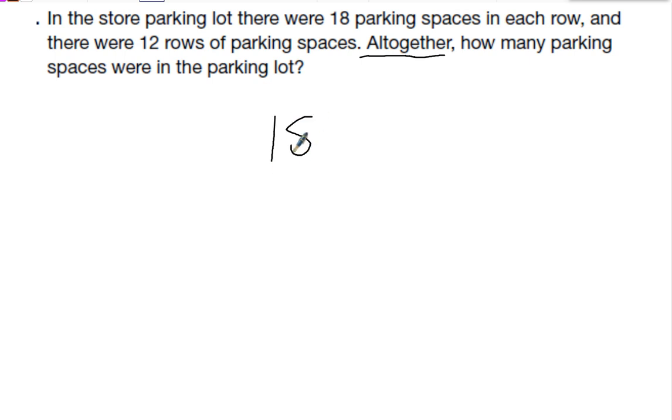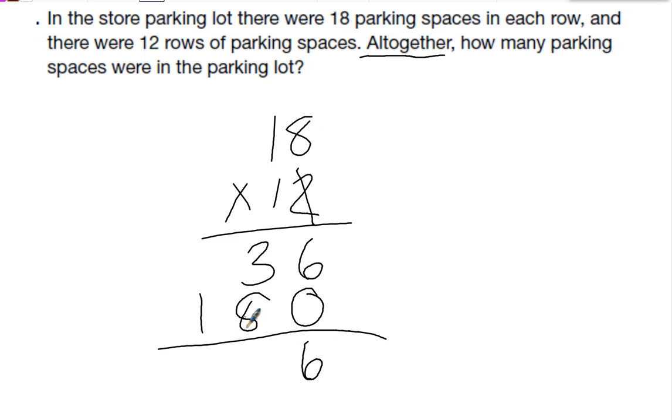Since I want to know all together, that's the total. I'm going to take 18 and times it by 12. 2 times 8 is 16. Carry my 1. 2 times 1 is 2, plus 1 is 3. Cross the 2 off. Put a 0 down. 1 times 8 is 8. 1 times 1 is 1. That's 6, 11. Carry my 1. 2. So there are 216 parking spaces.